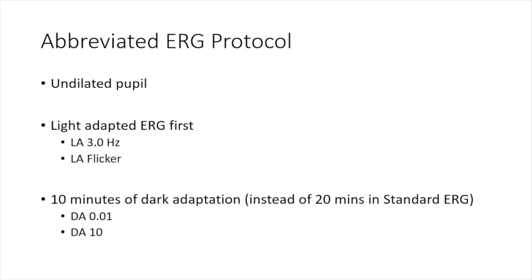The abbreviated ERG protocol was introduced in the 2021 updated ISCEV guidelines — it is newer and not yet widely practiced. It has certain advantages: it saves time and can be done in an undilated pupil. In a full field ERG, full pupillary dilatation is required. In an undilated state, the amount of retina exposed is less, so you will get reduced amplitude ERGs even in a normal individual — this is expected and normal for this protocol.